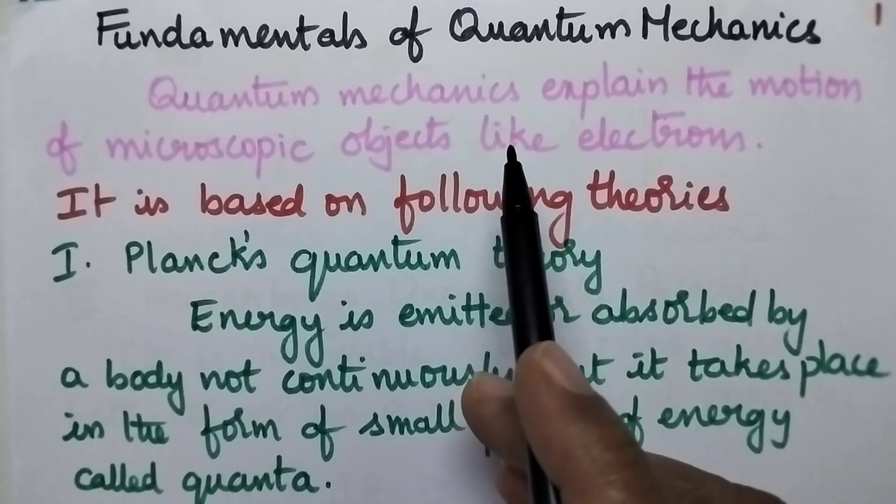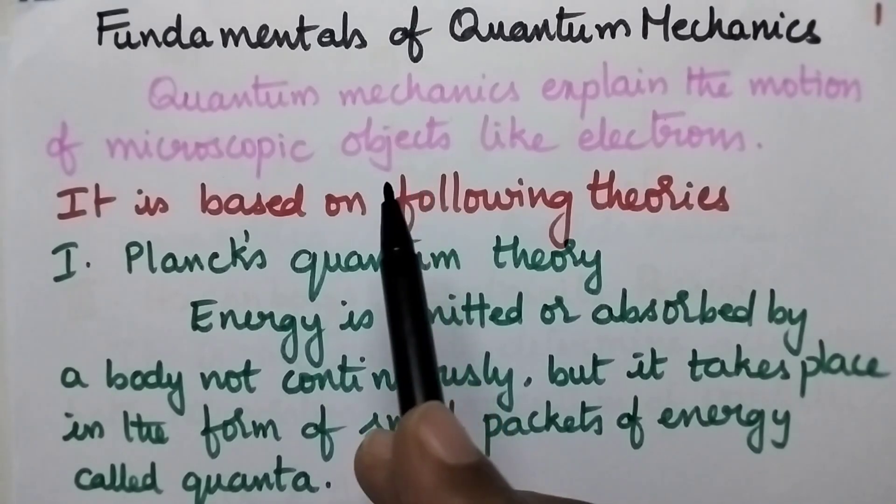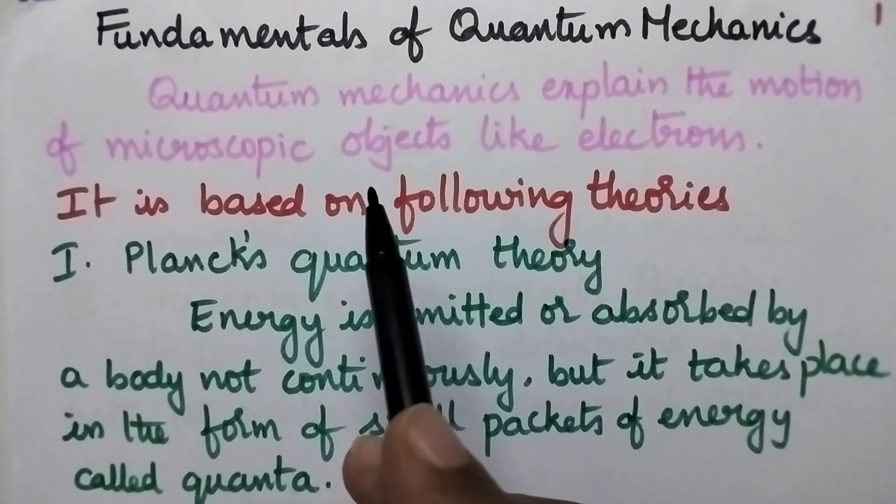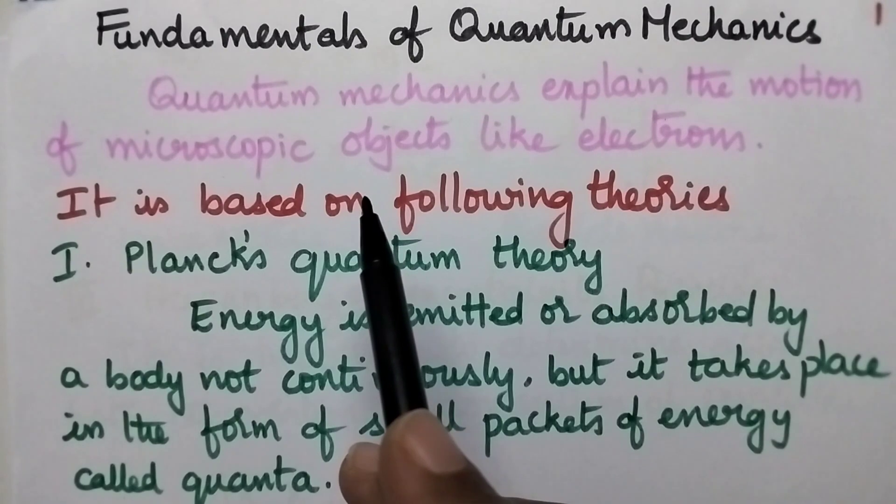Quantum mechanics is totally based upon five fundamental principles: Planck's quantum theory, Einstein's wave equation, de Broglie's equation, Heisenberg's uncertainty principle, and Schrodinger wave equation.